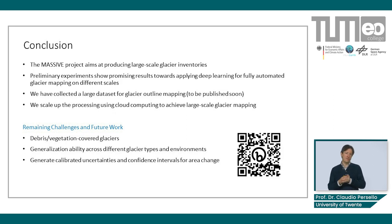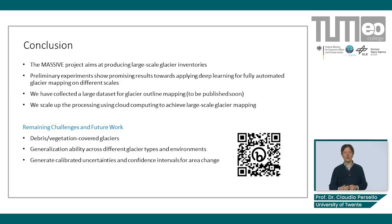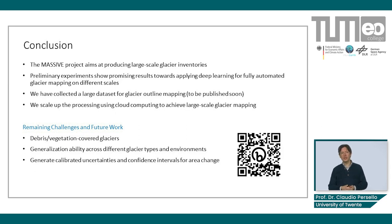Debris and vegetation-covered glaciers are still difficult to map accurately, therefore we need to further investigate advanced methods to improve accuracy in these areas. The generalization ability across different environments in the world and glacier types is difficult, and we are currently exploring a variety of strategies to cope with this problem. Next to that, the quantification of calibrated uncertainty and confidence intervals is very important for better interpreting the predictions made by machine learning models, and we are currently exploring Bayesian methods to quantify and calibrate uncertainties.